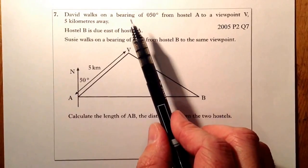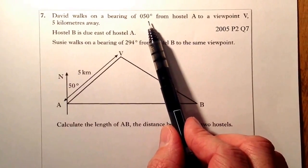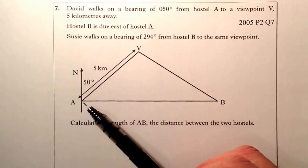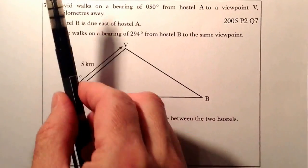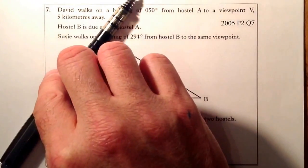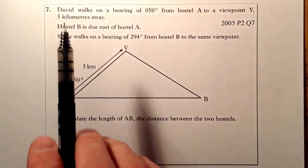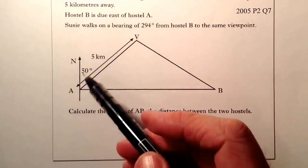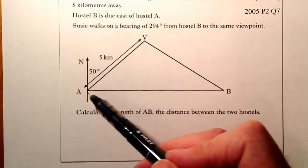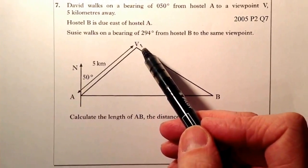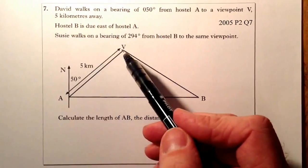So David walks on a bearing of 050 degrees from Hotel A, so from here. And remember, bearings are always measured clockwise from north. And he walks on that bearing from Hostel A to V, the viewpoint. That's 5 kilometres away.